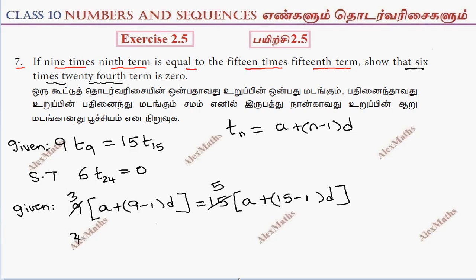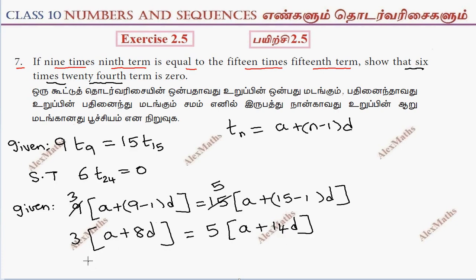So we have 3 into (a plus 8d) equals 5 into (a plus 14d). Expanding: 3a plus 24d equals 5a plus 70d.